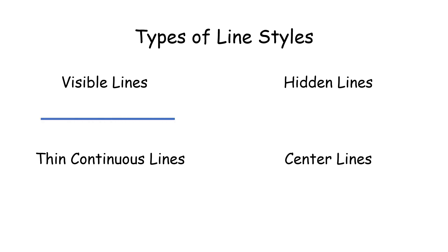Visible lines are solid and straight and are used for edges or outlines which are visible. Hidden lines are dashed and straight and are used for edges or outlines which are hidden.